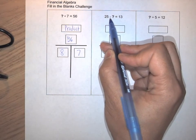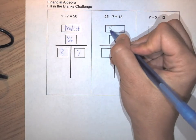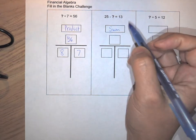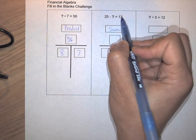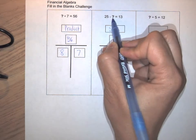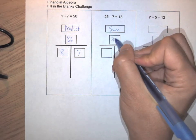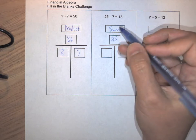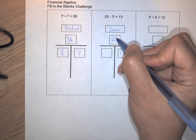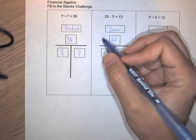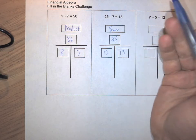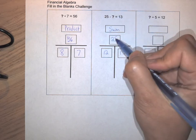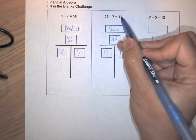This one has a subtraction, which means we're looking at a sum relationship. The thing that I'm missing is the amount I'm trying to subtract. The question is: 13 plus what is going to give me 25? I can use the inverse relationship and say 25 minus 13 is 12. That shows what's being modeled right here: 25 minus 12 equals 13.